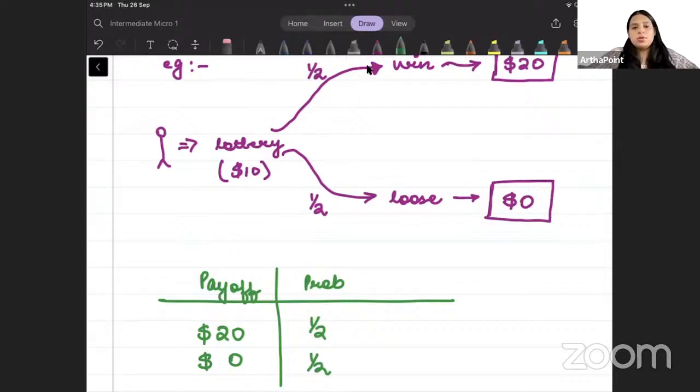Hamne ek consumption bundle defined kiya. We have defined a consumption bundle. What is his payoff? Either he can consume $20 or $0. And what is the probability associated with it? Half and half. When we do this, jab hum isko aise likte hai, this is called as probability distribution.